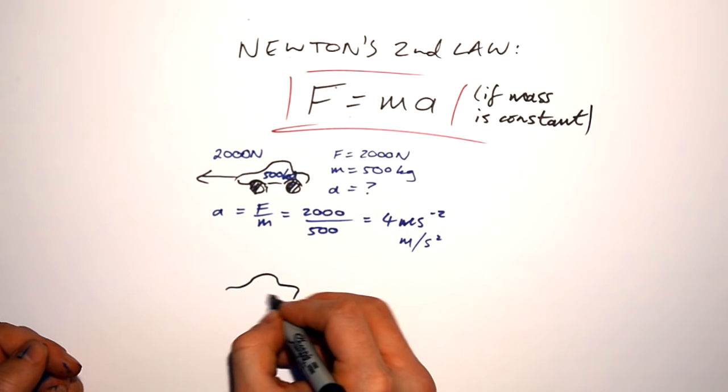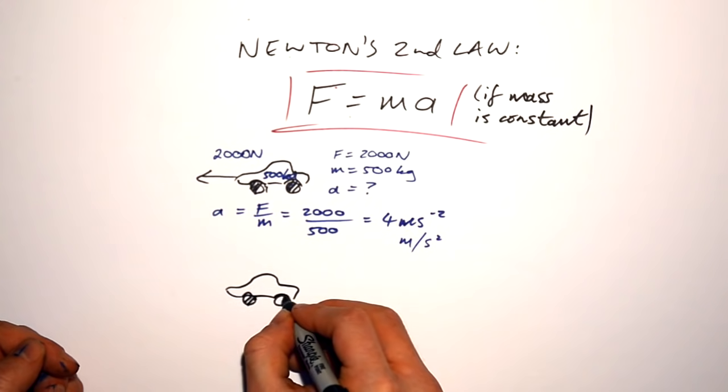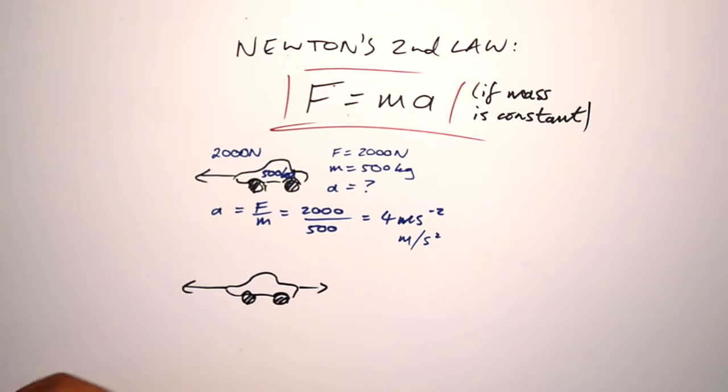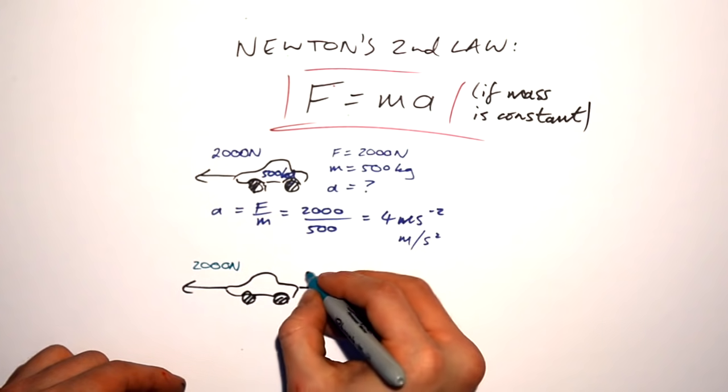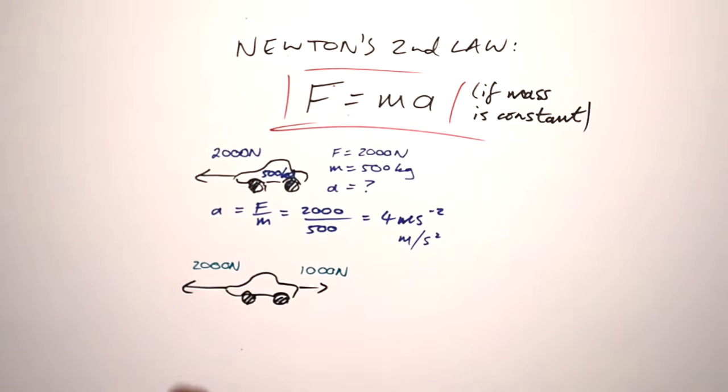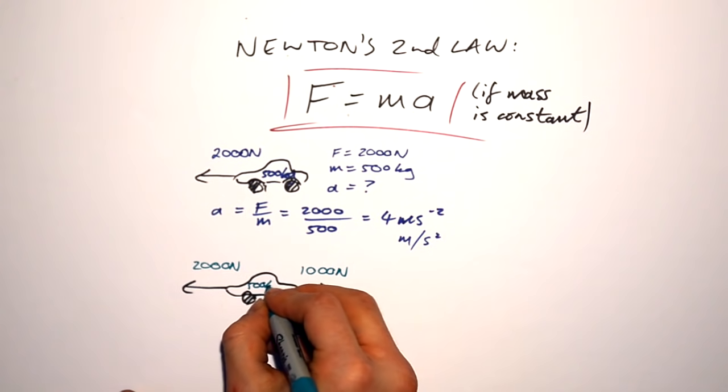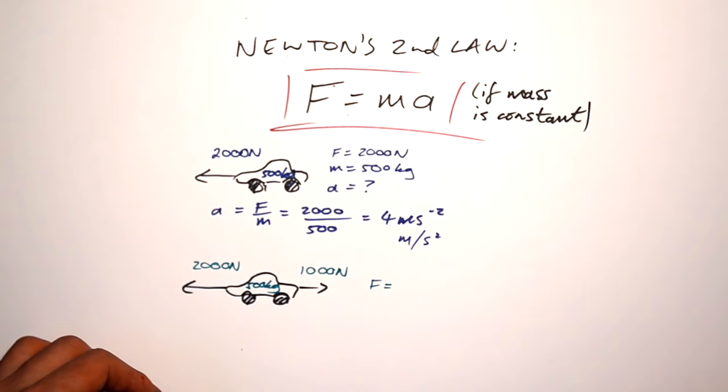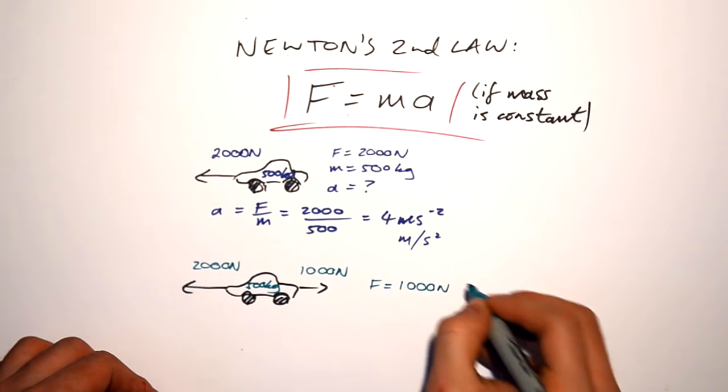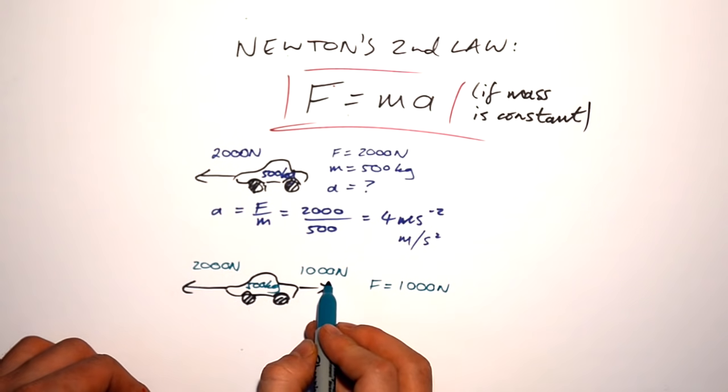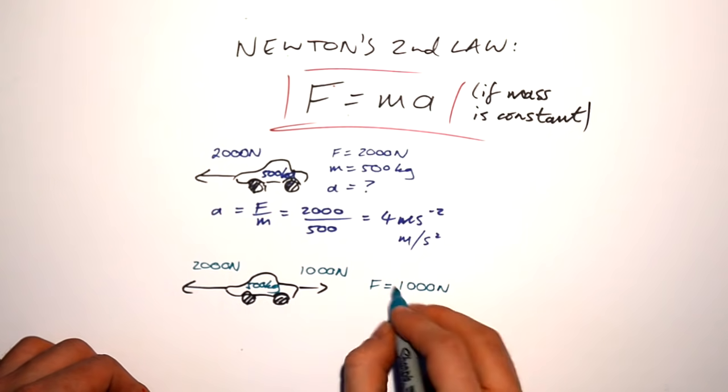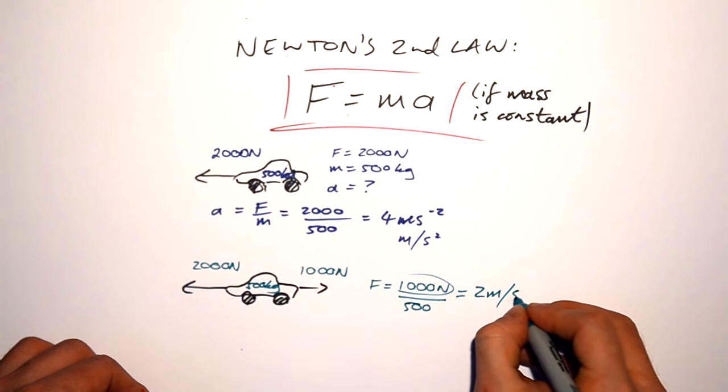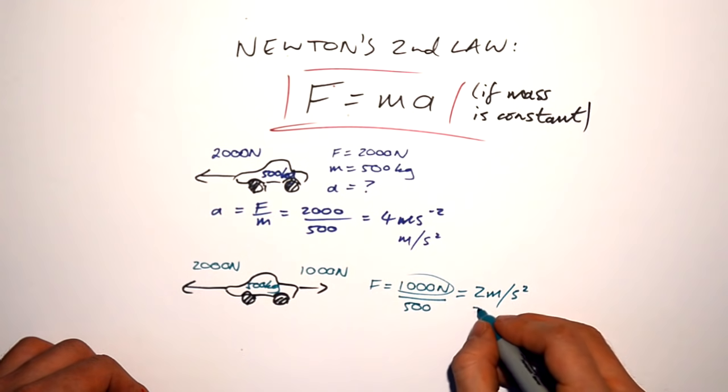Of course if there was a drag force pulling in the opposite direction. So still pushing with 2,000 newtons. But the problem is that we have a drag force. Frictional forces. Could be air resistance. Could be friction. Don't know. Still 500 kilograms. Then of course our resultant force is not going to be 2,000 newtons anymore. It's going to be 1,000 newtons. Because 2,000 take away 1,000 newtons of drag force gives us a resultant force of 1,000 newtons. Divide that by 500 again and that gives us a slower acceleration of 2 meters per second squared.